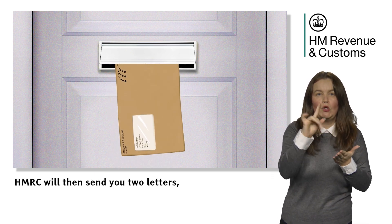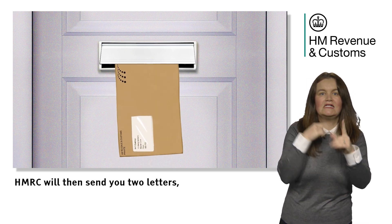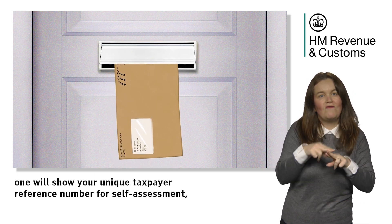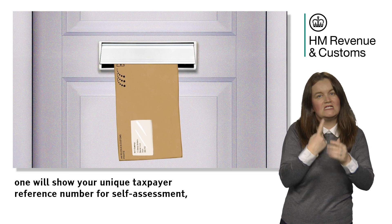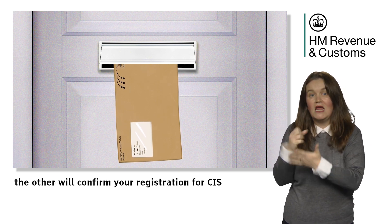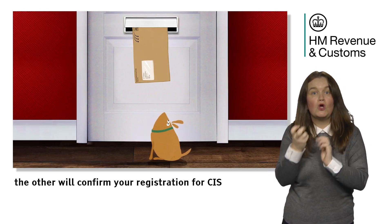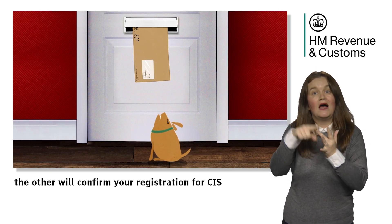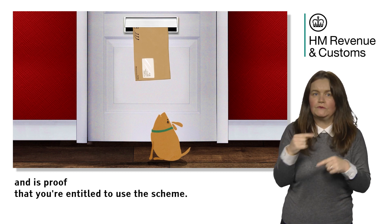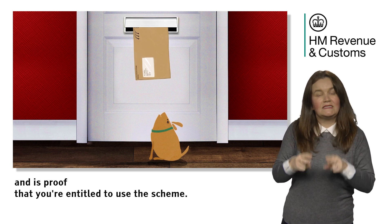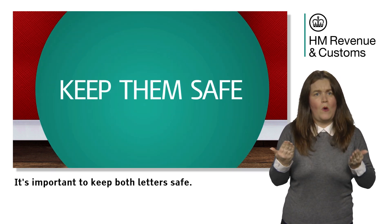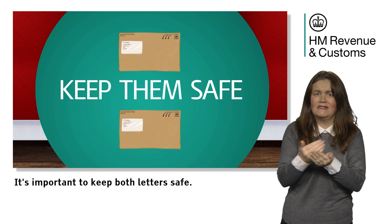HMRC will then send you two letters. One will show your unique taxpayer reference number for self-assessment. The other will confirm your registration for CIS and is proof that you're entitled to use the scheme. It's important that you keep both letters safe.